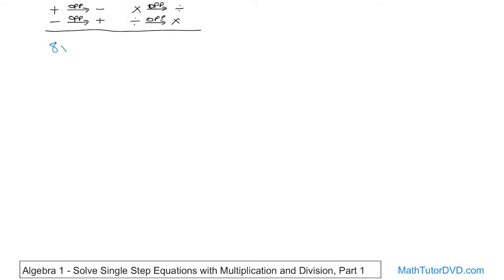If you have the equation 8 times x is equal to 16, how do you think you would solve it? There's no addition going on here. In previous problems we had to add or subtract to get x by himself, but now we have multiplication where the 8 is being multiplied by x. So in order to get rid of the 8, we need to do the opposite, which means division. You rewrite the equation and divide the left-hand side by 8, and in order to balance the equation, you divide the right-hand side by 8 as well.